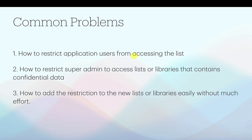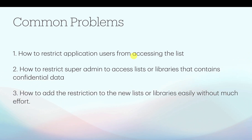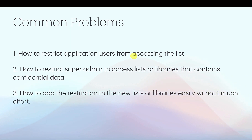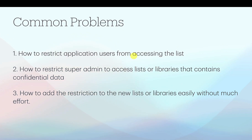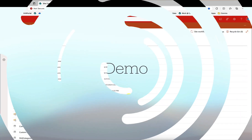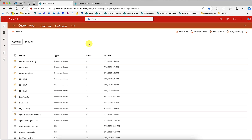The third problem is: if you do find a solution and you are maintaining permissions, how will you enforce these permissions on new lists or libraries that come in, with minimal effort? These are the problems that the Controlled Access extension will address and solve. Let us see a demo — this is my site collection where I have deployed the extension.